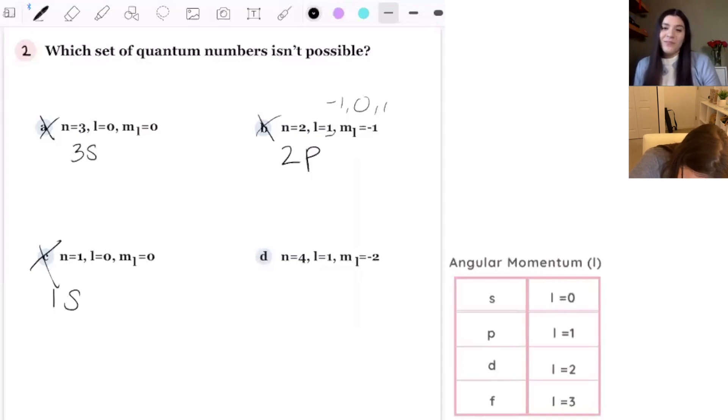Okay. So n equals 4, 4p. 4p is, is 4p not, you know, 4p is possible. Right. Okay. So, oh, well, that's why. Okay. Okay.